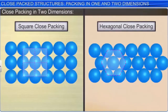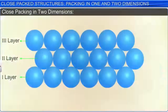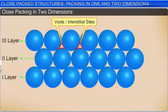Joining the centers of these six spheres gives a hexagonal pattern, so this type of close packing is also referred to as hexagonal close packing. Comparing the two arrangements, hexagonal close packing allows constituent spheres to occupy space more efficiently. Some spaces are left vacant after the close packing of the spheres; these vacant spaces are called voids or interstitial sites.